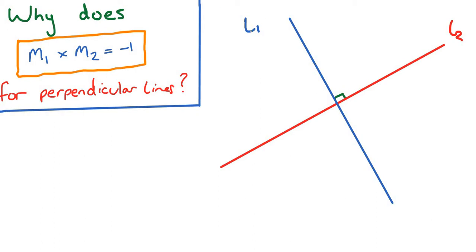Okay, so I've called the blue line L1 and the red line L2. Let's just write down the equations of these lines as best we can using y equals mx plus c. So L1 is m1 x plus c1, L2 is m2 x plus c2. So m1 and m2 are the gradients, c1 and c2 are the y-intercepts.